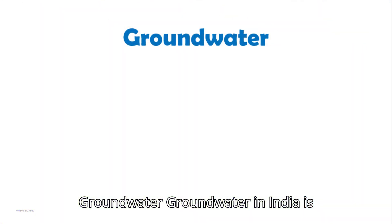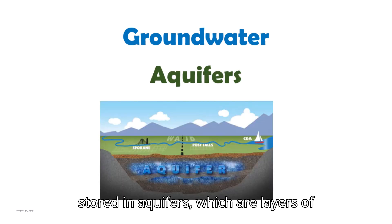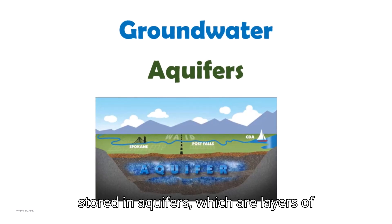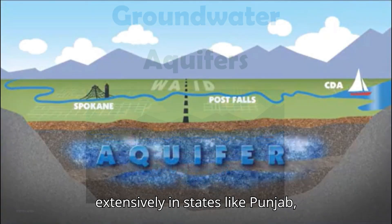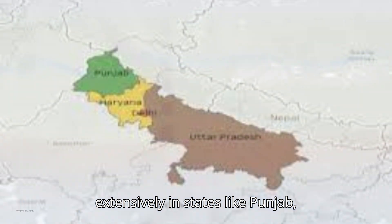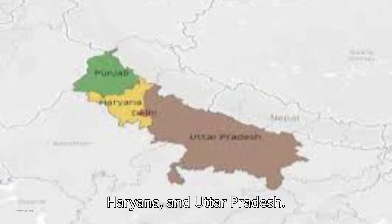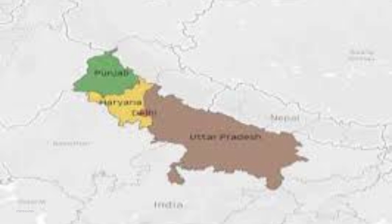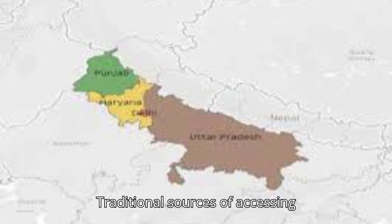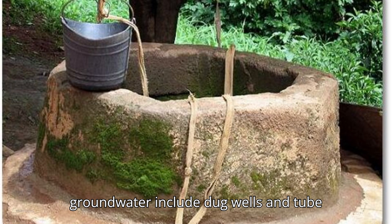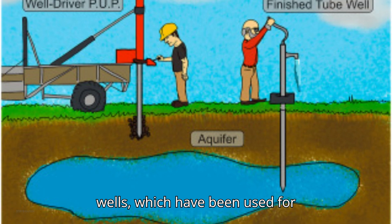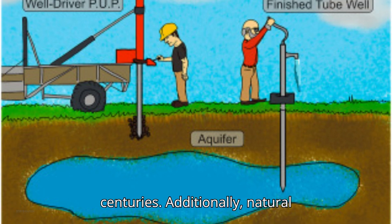Groundwater in India is stored in aquifers, which are layers of water-bearing rock or sediment found extensively in states like Punjab, Haryana, and Uttar Pradesh. Traditional sources of accessing groundwater include dug wells and tube wells, which have been used for centuries.